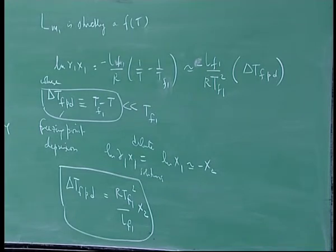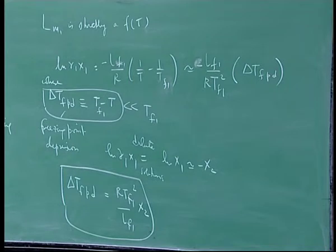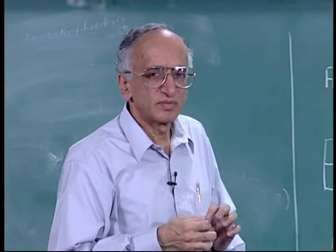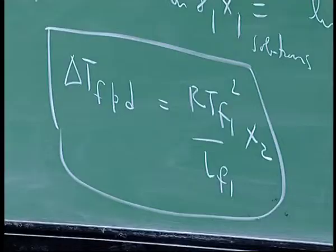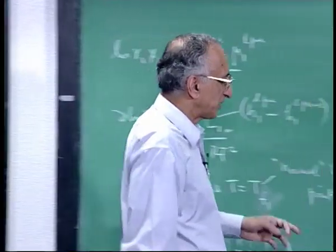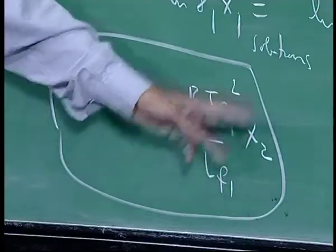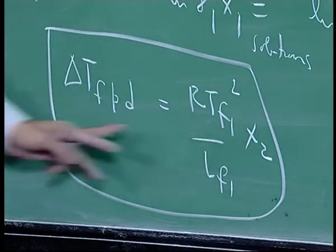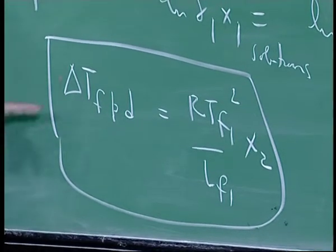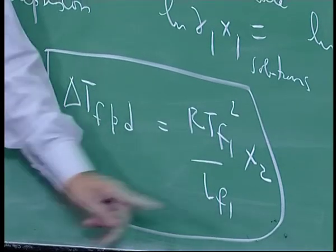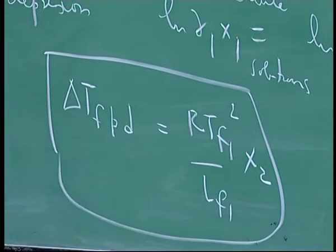So define this way delta T freezing point is simply equal to R Tf1 square divided by Lf1 into x2. You are actually solving a phase equilibrium problem, but the information you get from the phase equilibrium problem is the depression in the freezing point upon addition of solute. Actually it has a, most physical chemists use it to calculate molecular weights of polymers. What they do is weigh a certain amount of polymer, M2 will be the weight of the polymer, they add it to known amount of solvent.